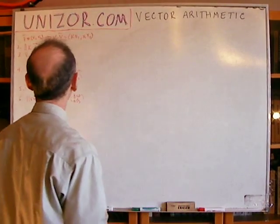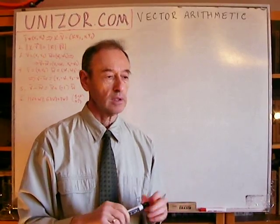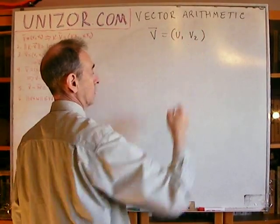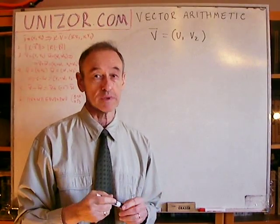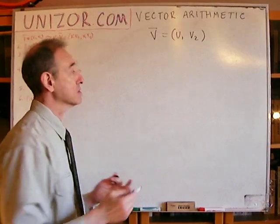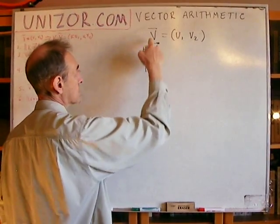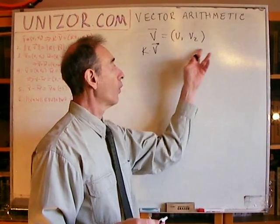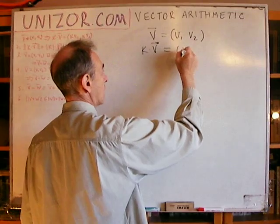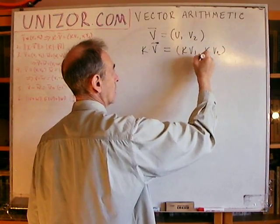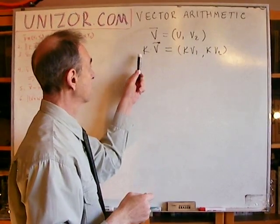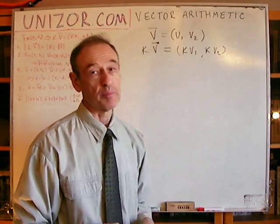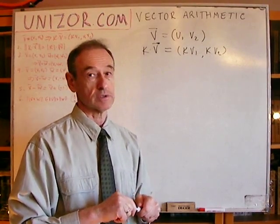Let's just do the problems. The first problem: let's consider a vector V with tuple representation (V1, V2) — let's say it's two-dimensional; for three dimensions it would be exactly the same. Let's consider the vector which is the result of multiplication of V by some real number K. What happens with the coordinates? The theorem states that the coordinates are also multiplied.